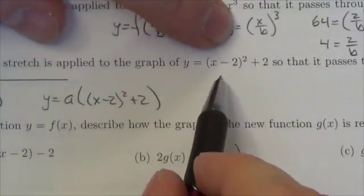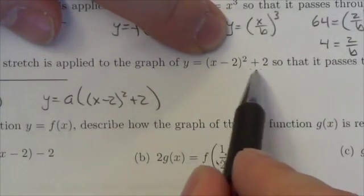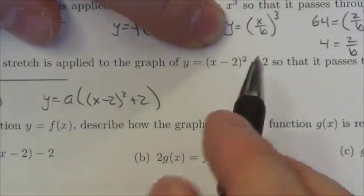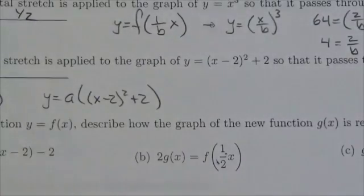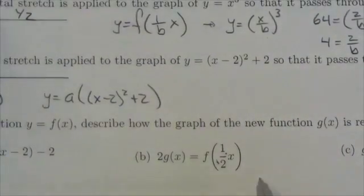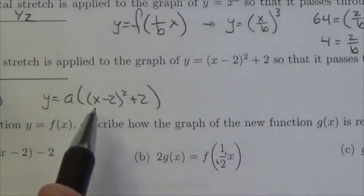Because there's been a translation in the original function - horizontal and vertical - this is the entire function. If I put my stretch in after those have occurred, which is what this question asks me to do, then my stretch needs to apply to the whole function. I can't just put it in front of the x² term.